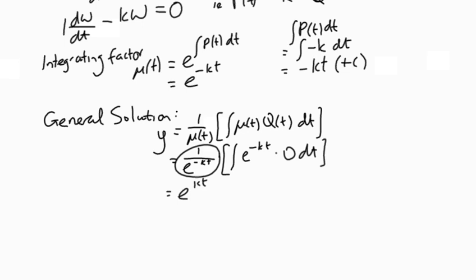We end up with e to the kt, since one over e to the negative kt is e to the kt. The integral of zero with respect to t gives us zero plus c. The crucial thing is we're left with the constant of integration. y equals c times e to the kt, and that is our general solution.